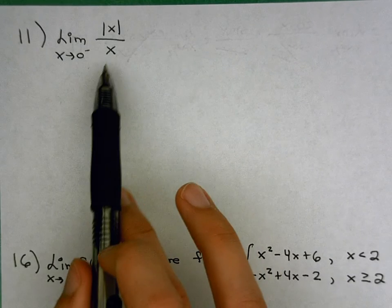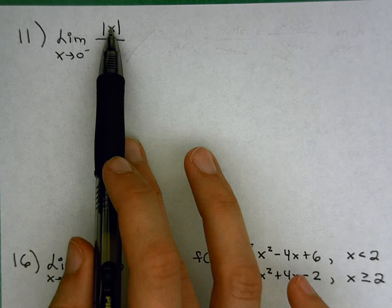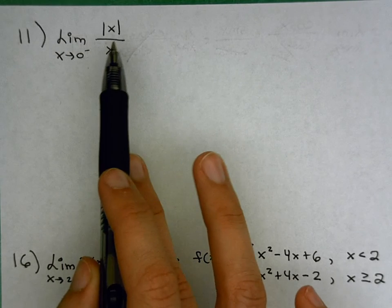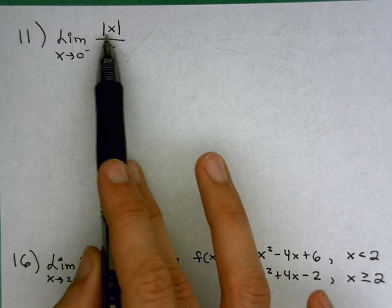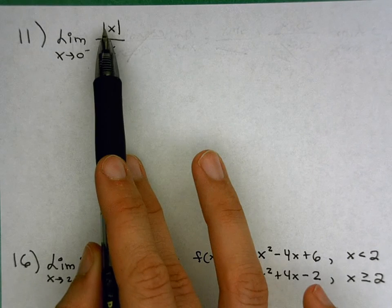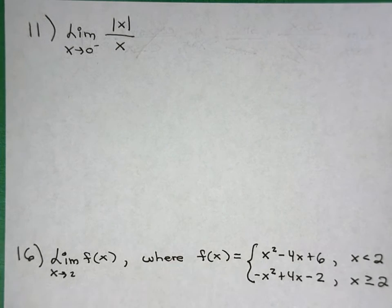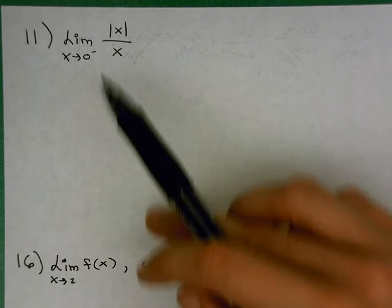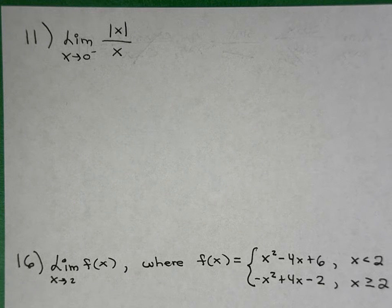And when I look at this function, there's a part of me that wants to simplify, right? x over x looks like it could become 1. The issue we run into is with the presence of these absolute value bars. Because of those absolute value bars, there's actually an interval where the absolute value of x over x does simplify to 1, but there's also an interval where it simplifies to negative 1.